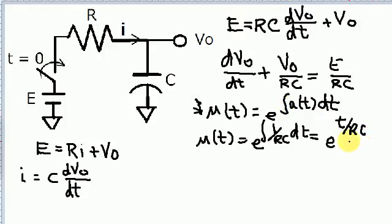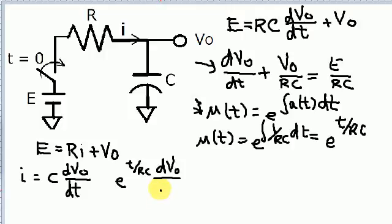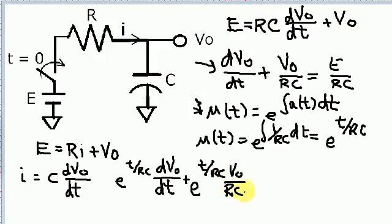What we're going to do is take this integrating factor and multiply it times all of the terms in the equation. That gives us: e to the t/RC times dV0/dt, plus e to the t/RC times V0 divided by RC, equals e to the t/RC times E divided by RC.